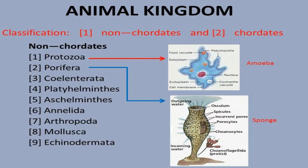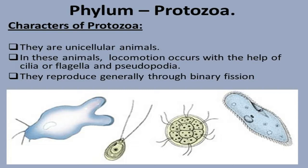In Protozoa, the first organisms are primitive animals such as Amoeba, which you have been studying since earlier classes. Today we are reading about two phyla: Protozoa and Porifera, whose examples are Amoeba and Sponges respectively.